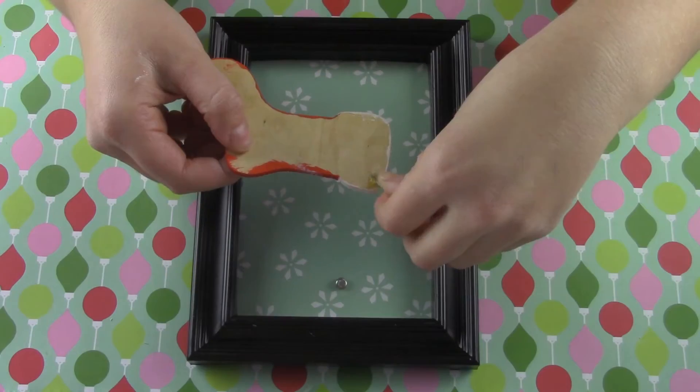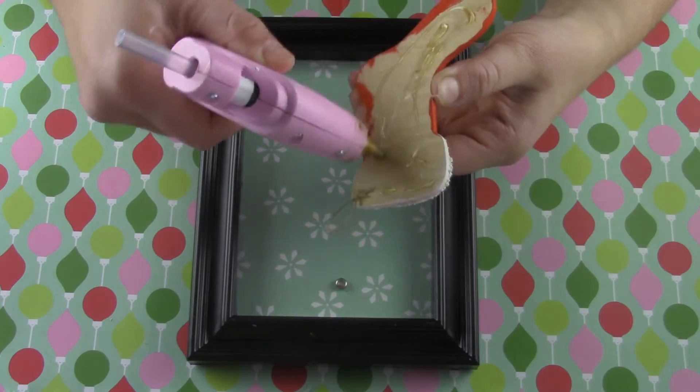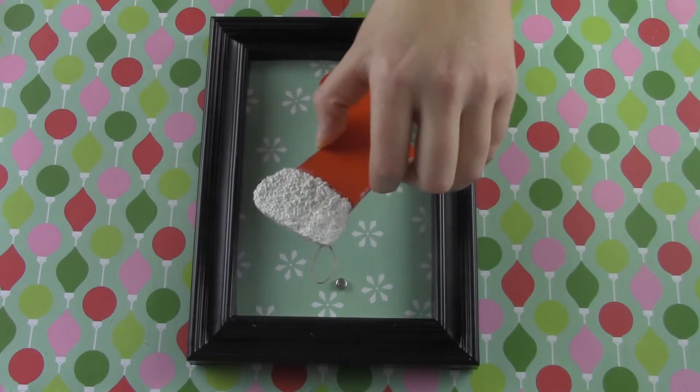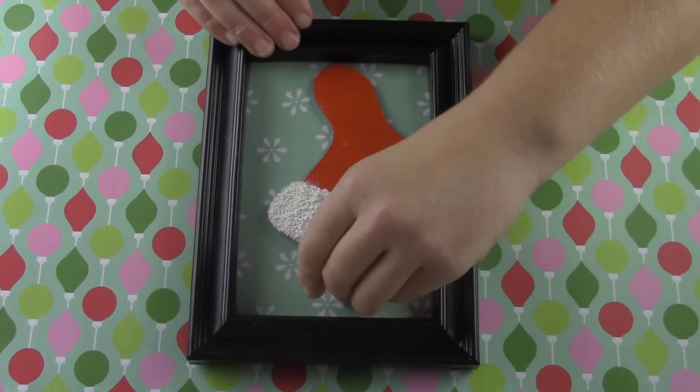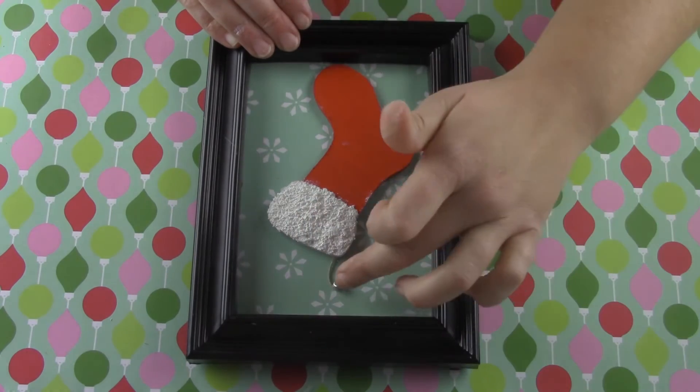Glue on a small loop of string, glue your stocking to your picture frame, and lastly glue on the item you're using as the nail. And now it looks like a stocking hanging in a picture frame.